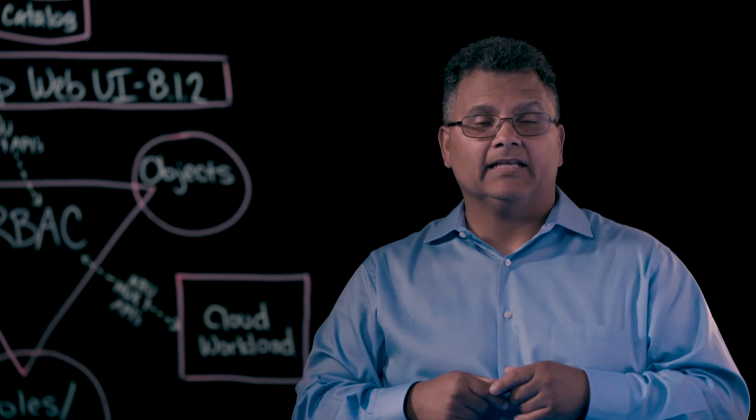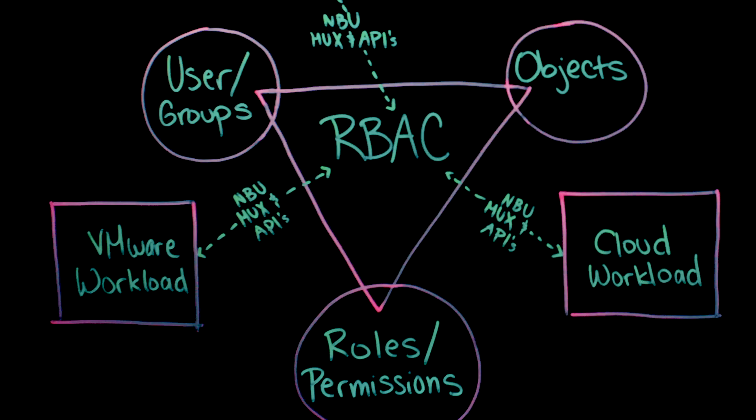RBAC is made up of three key areas. One, users and groups — we're able to give a specific user or group certain access. Two, roles and permissions — this is where we can set up custom roles or use canned roles for a particular user or group. And third, objects — what objects do they have access to? What VMware resources or what cloud resources do they have access to? So we can uniquely customize their experience.